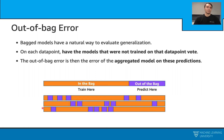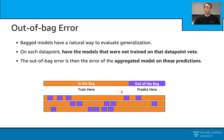Let's talk about one more interesting concept: out-of-bag error. Bagging models have a natural way to evaluate generalization. When calculating the error for a data point, we can use a model that did not see this data point during training — we call this the out-of-bag error. For each model, we train on the data points in the bag, but get predictions for the data points that were out of the bag, i.e., not used for training that model. This gives us a reliable generalization evaluation.